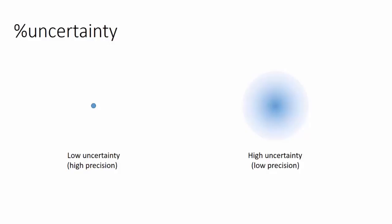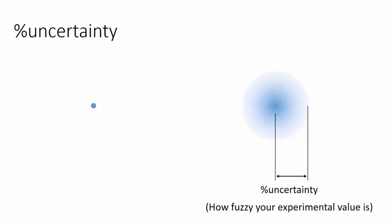Like you know that number to many decimal places, you have very little uncertainty. Or you could have a fuzzy high uncertainty situation, which we call low precision. So it's more like a scatter shot, it's huge range. And as a measurement of how fuzzy things are, we use this percentage uncertainty, which is how fuzzy your experimental value is.